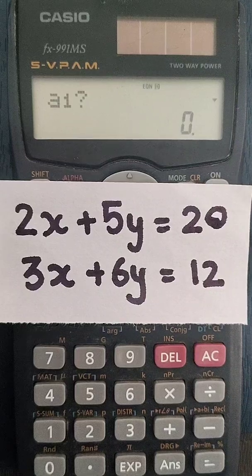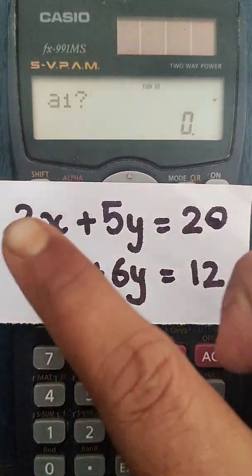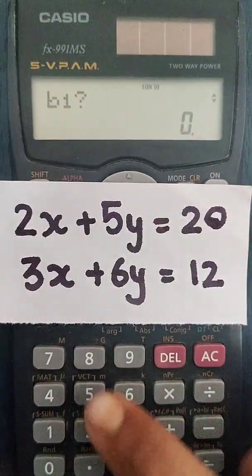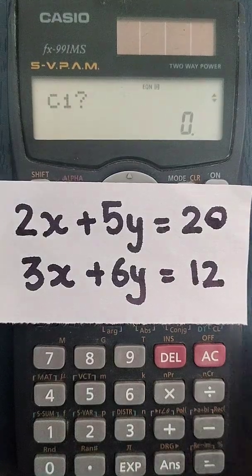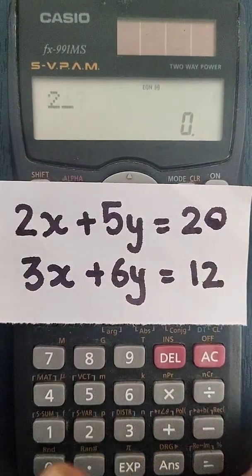So now it is going to ask the values to enter. For a1, we have 2. So we are going to enter 2. Then for b1, we have 5, we are going to enter 5. c1 will be 20, so we are going to enter 20.